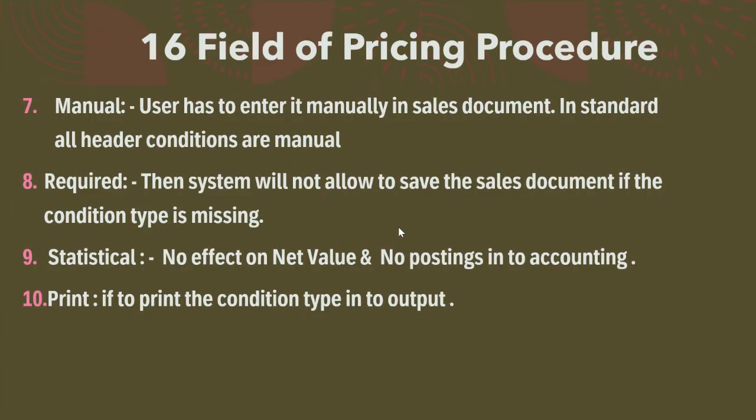The seventh field is Manual. If it is ticked, the user has to enter the value manually in the sales document. All header conditions are manual only — we do not create condition records using VK11 for header conditions. For line item conditions, we can also set them as manual.